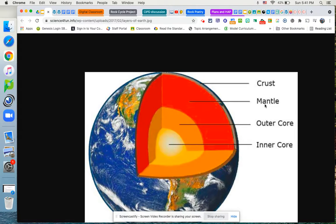If we go deeper in, we have the mantle. That's the layer in red. Then we have the outer core, which is the orange, and then the inner core, which is the yellow in the middle. As we go deeper into the Earth, the pressure and temperature, of course, increases.